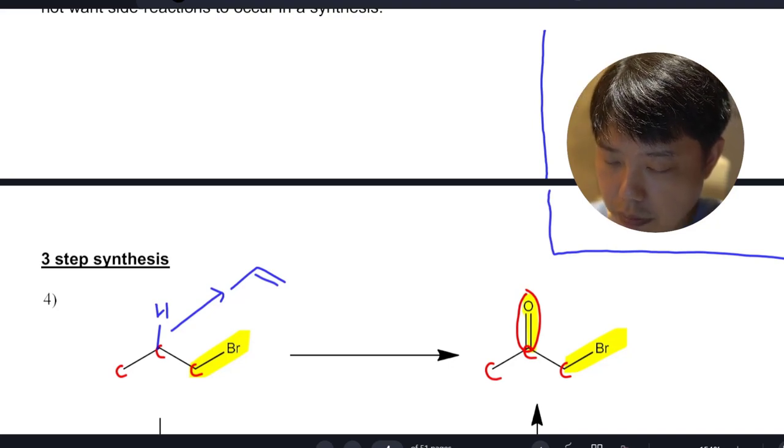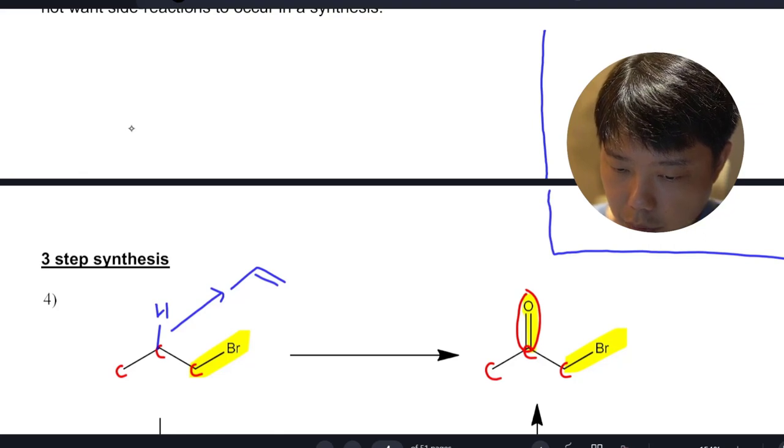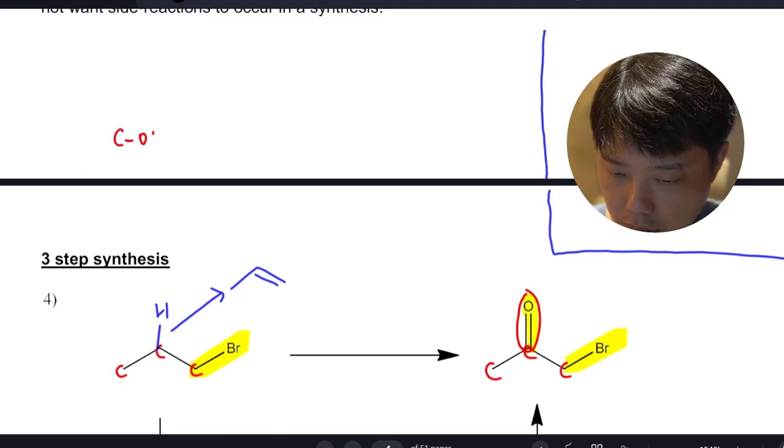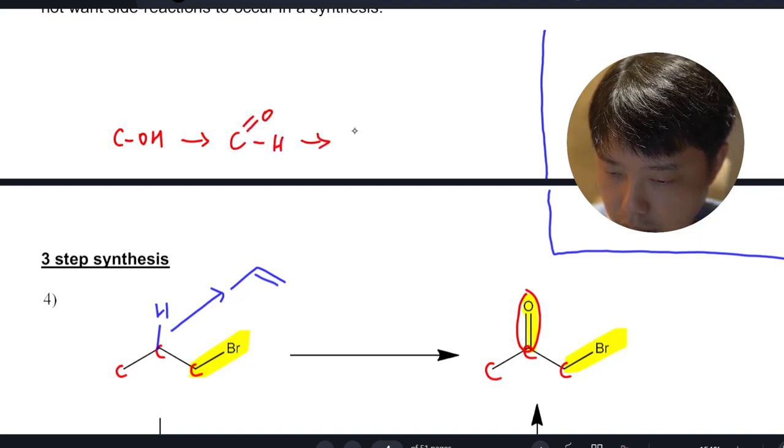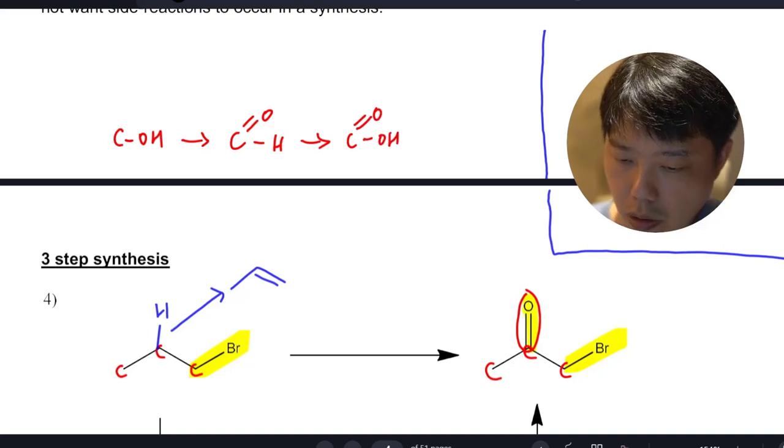How do I know that? Because normally we have the alcohol functional group become the carbonyl functional group, then it becomes the carboxylic acid functional group. So I call this the organic corridor, which I think you guys should be aware of.